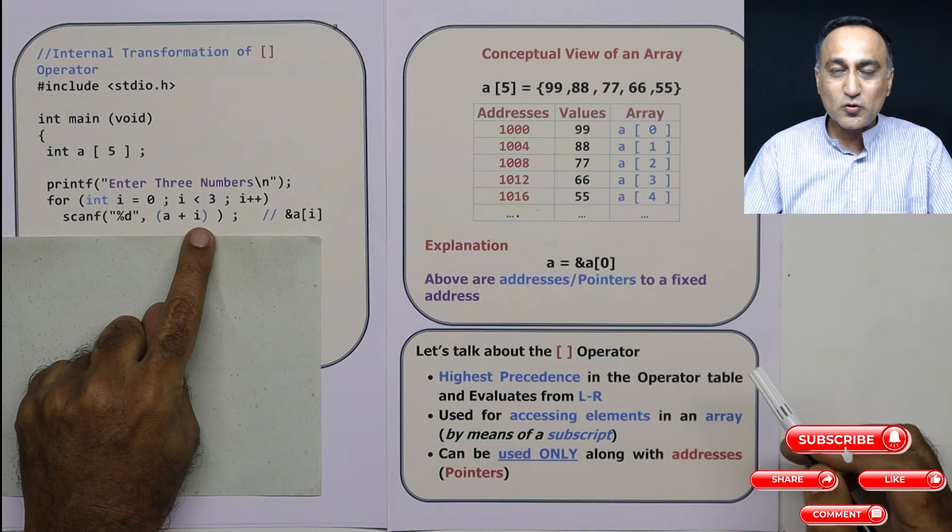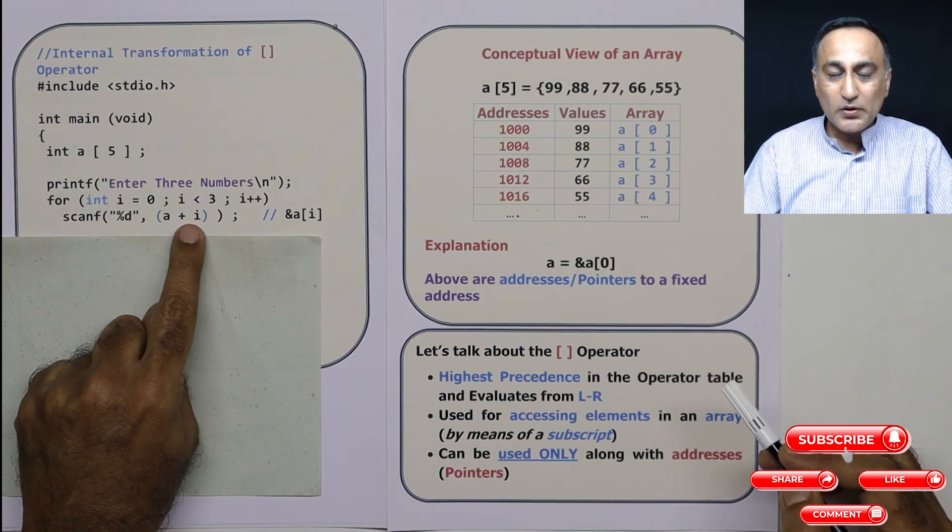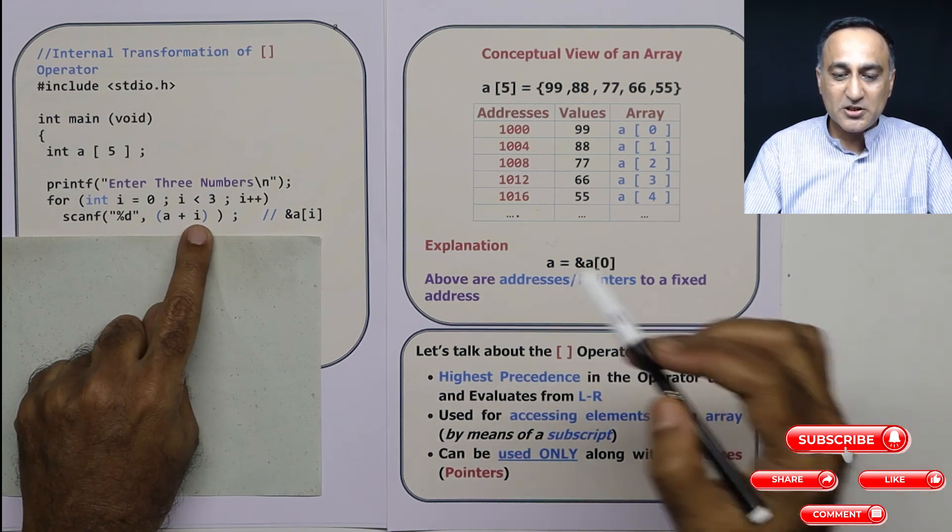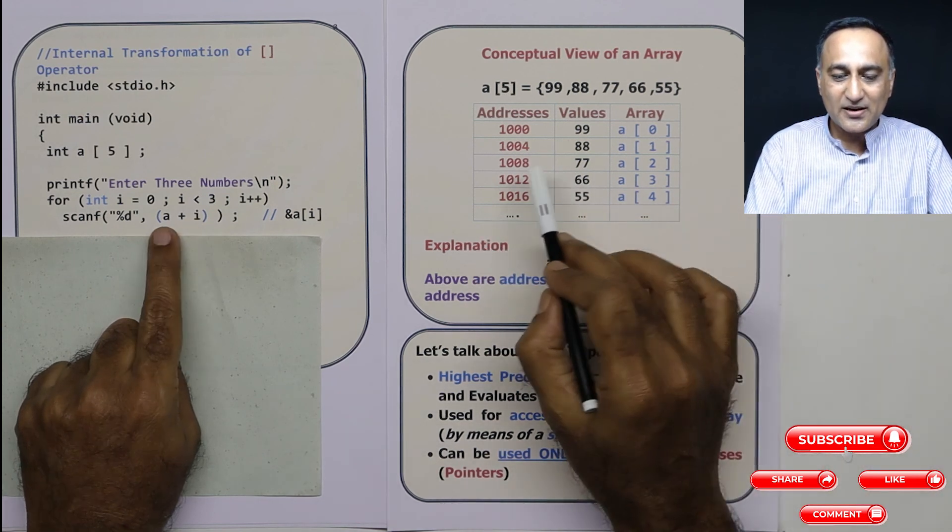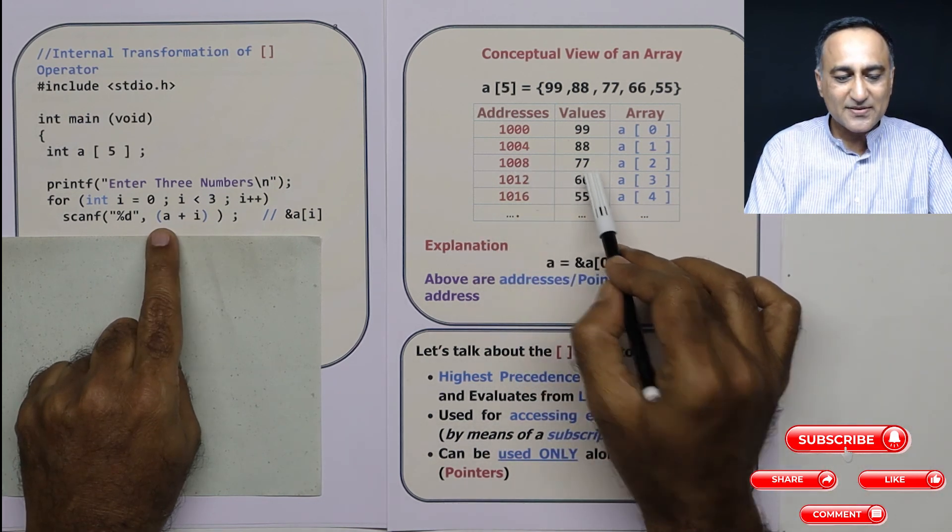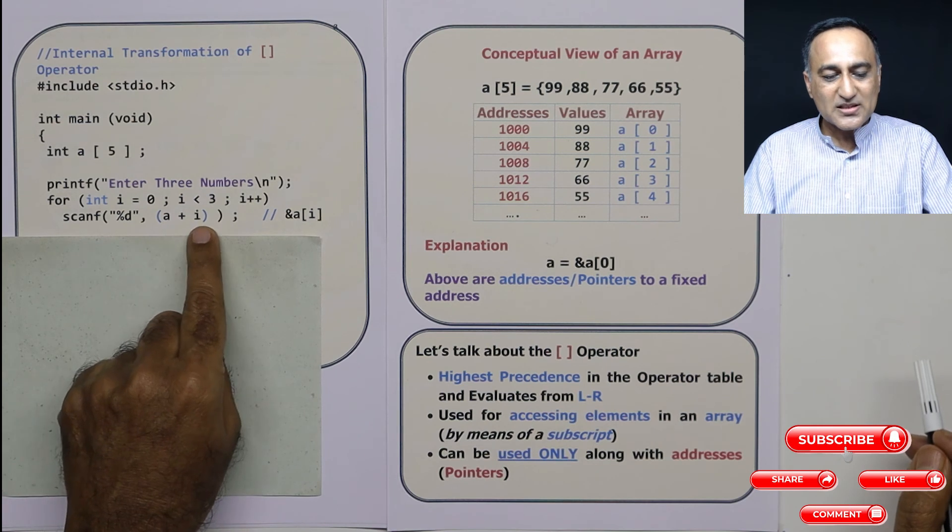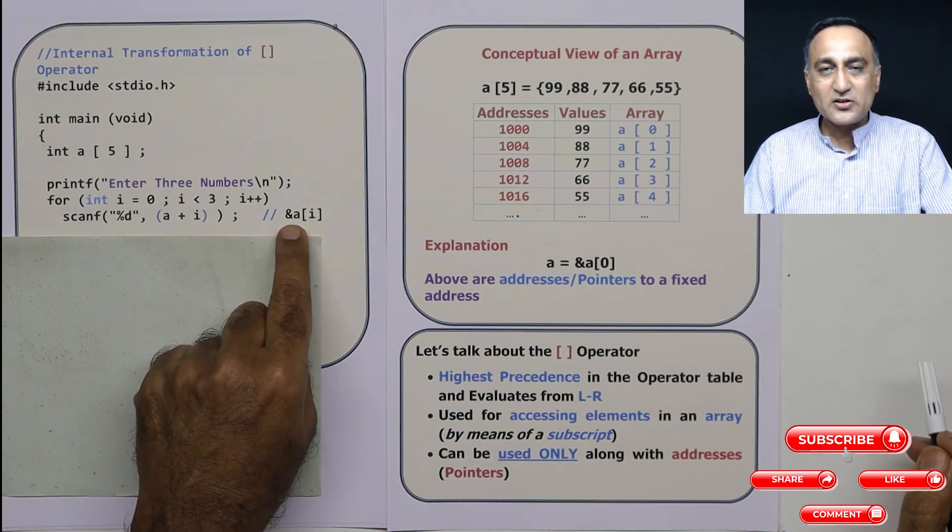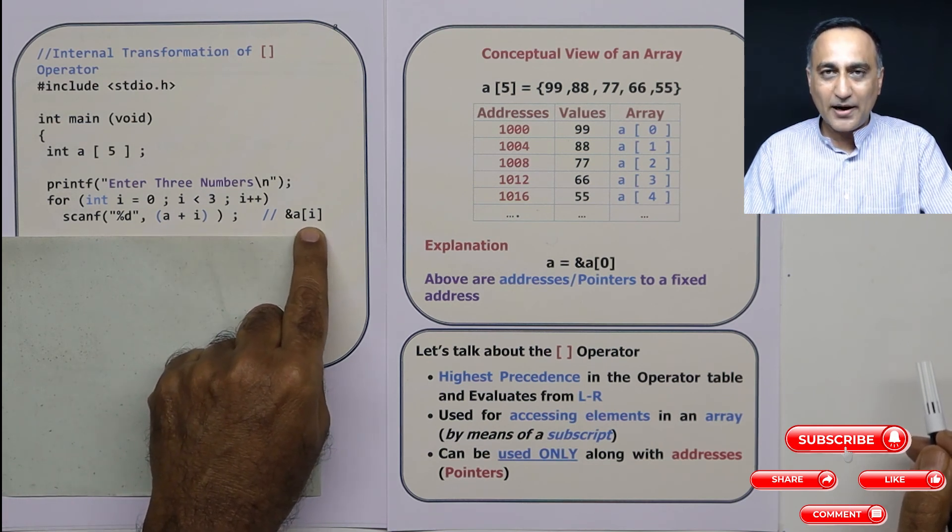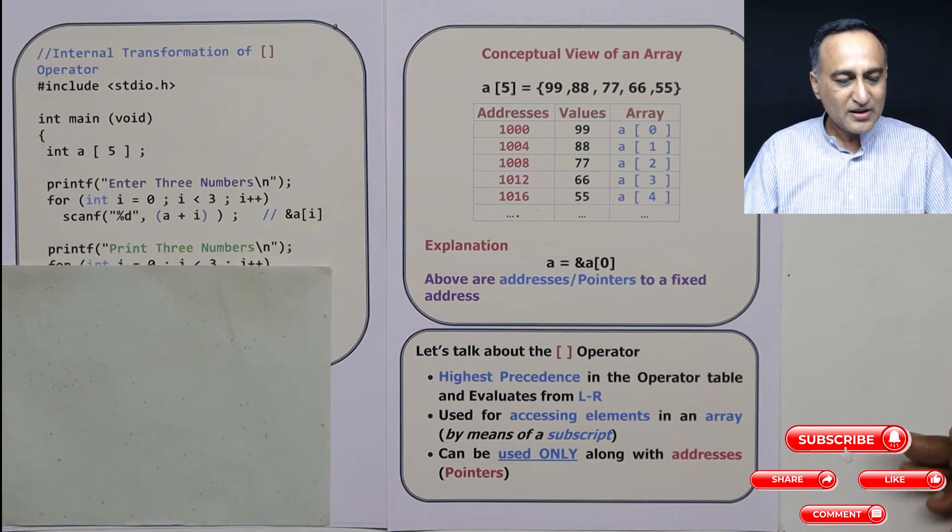I becomes 2. This is 1000 plus 2 into size of int on this machine which is 4 bytes. 2 into 4 is 8. 1008 is 77. So this A plus I is equivalent to address of A of i, which is for me and you.